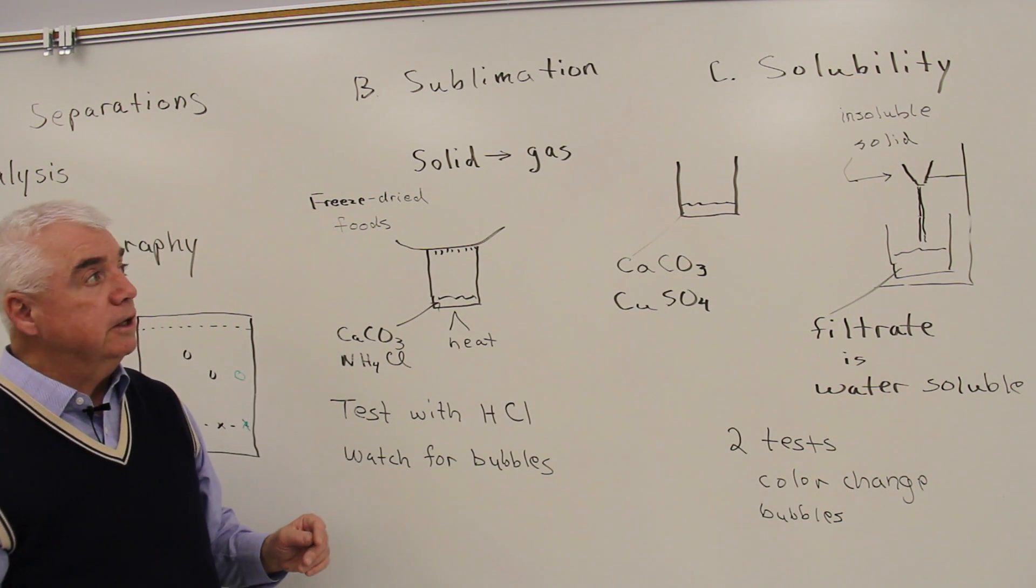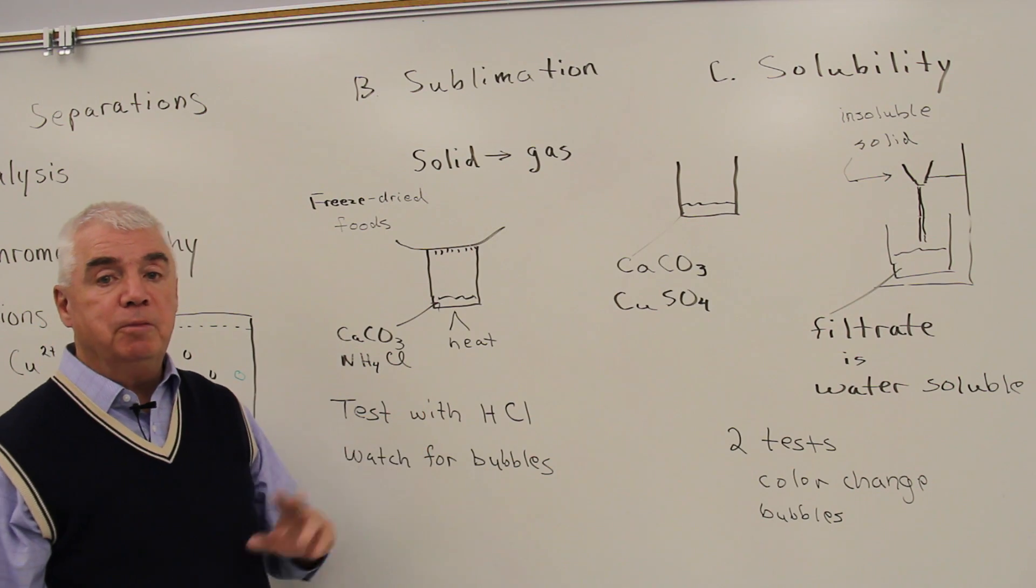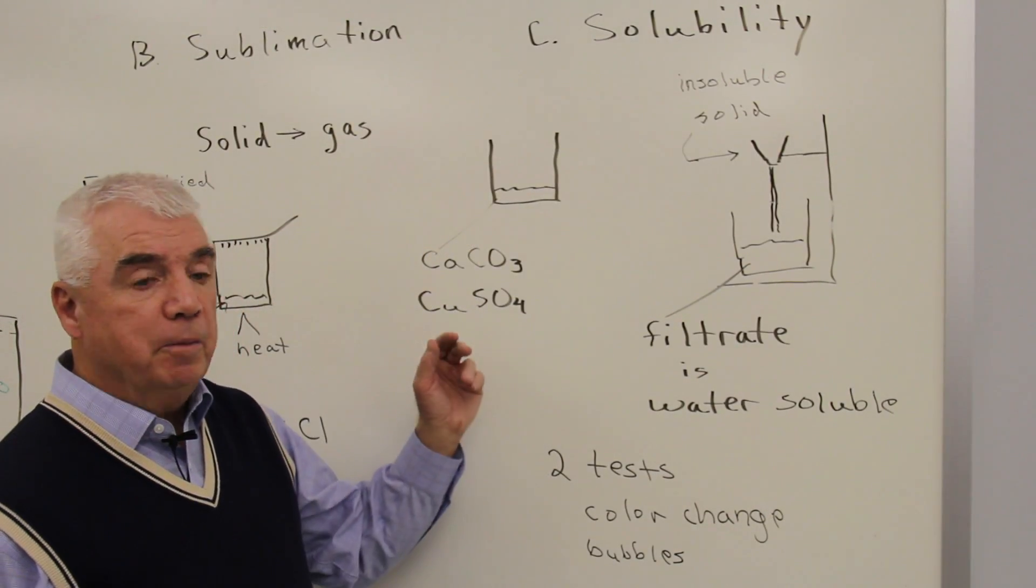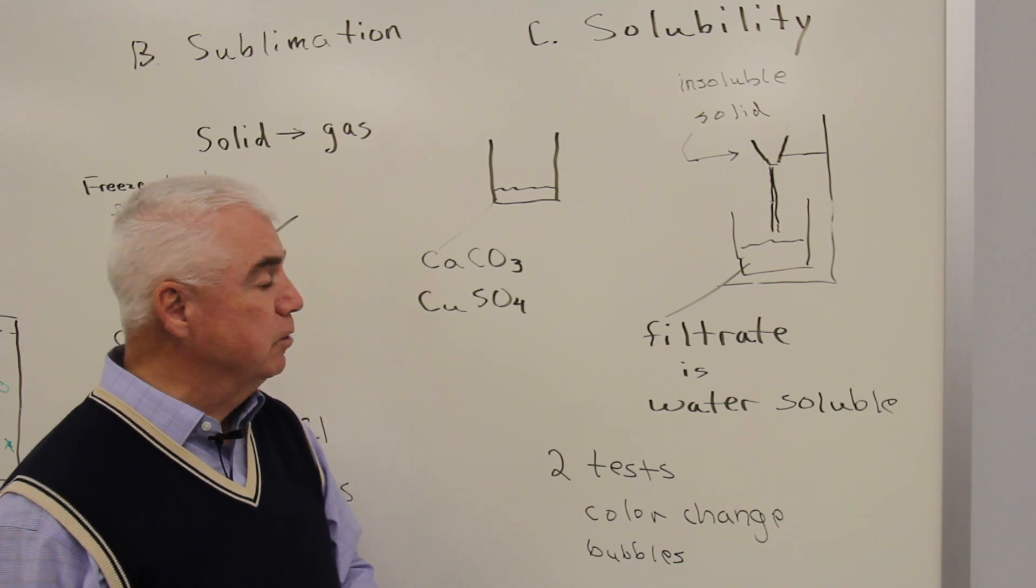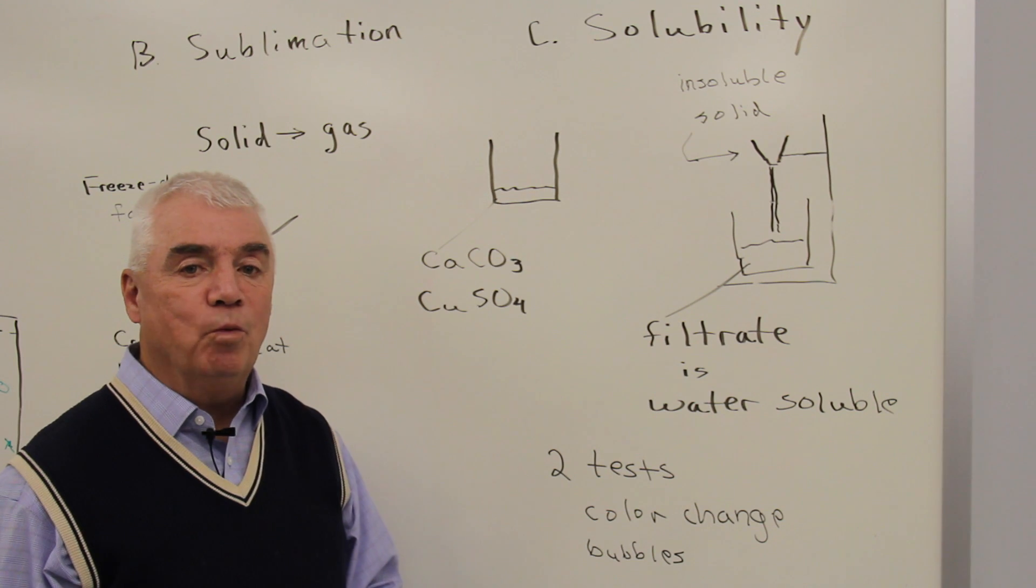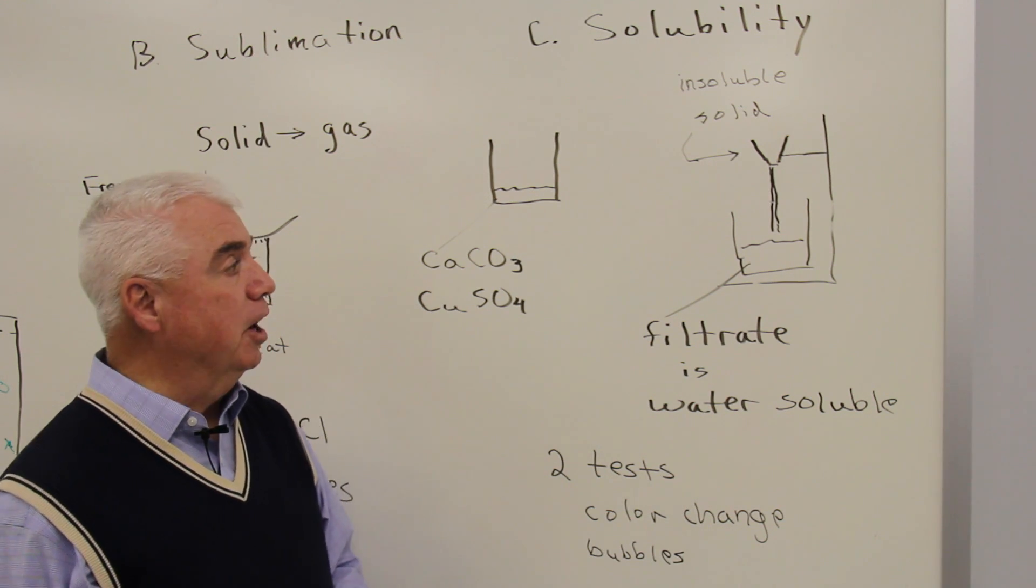In Part C, we'll look at using solubility to separate solids. In this experiment, you've got two compounds: calcium carbonate and copper sulfate. One of these is soluble in water. One is very insoluble in water.